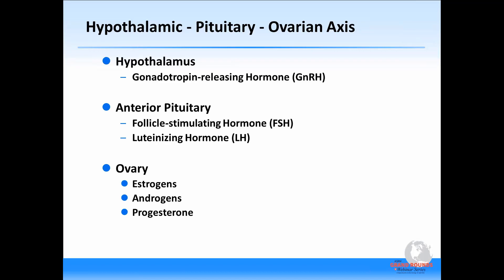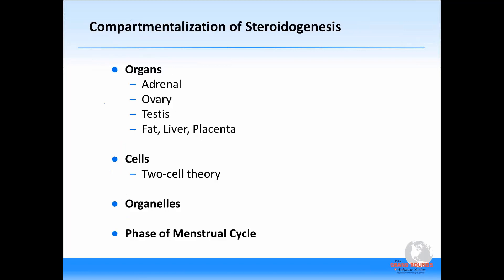When we talk about compartmentalization, one of the things that first comes to mind is the hypothalamic-pituitary-ovarian axis. The hypothalamus releases GnRH in a pulsatile fashion, with pulses every 60 to 90 minutes and a very short half-life of two to four minutes, allowing for precise modulation of pituitary function — FSH and luteinizing hormone. The frequency and amplitude of FSH and LH likewise determine the end product of the ovary: estrogens, progesterone, and the androgens.